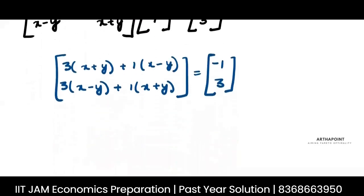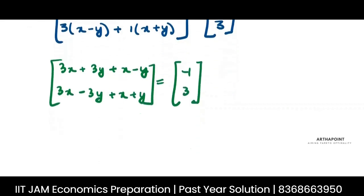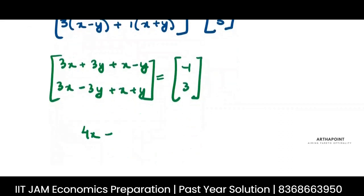Let's solve this further. So this will be 3X plus 3Y plus X minus Y. This will be 3X minus 3Y plus X plus Y is equal to minus 1, 3. So you will get 4X plus 2Y, 4X minus 2Y is equal to minus 1 and 3.